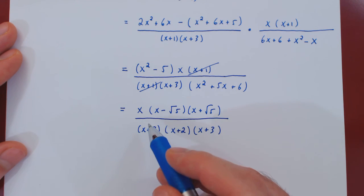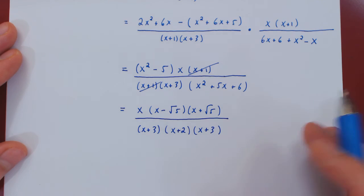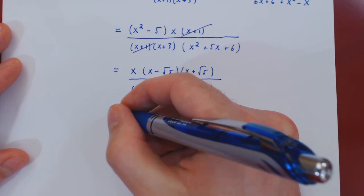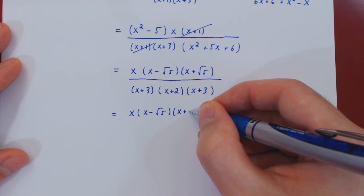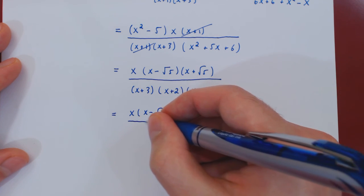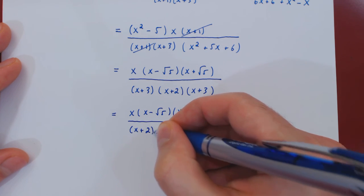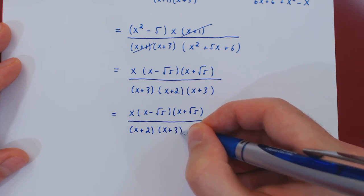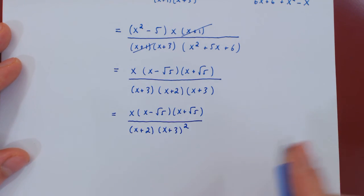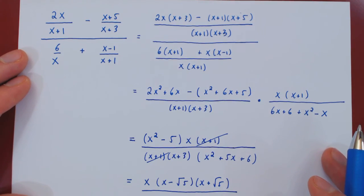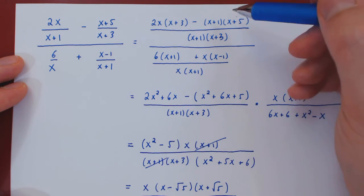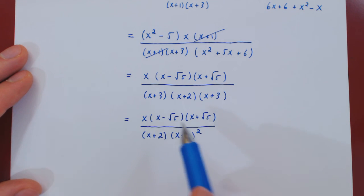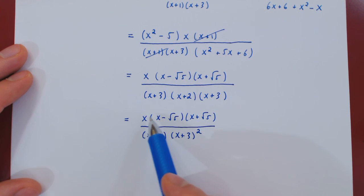And one last step. We have a redundancy on the denominator. (x + 3) shows up twice. So, we can and should regroup. This is an (x + 3)². So, on top we're left with x(x - √5)(x + √5). And on the bottom we have an (x + 2). Times an (x + 3). And again we have two of those. So, (x + 3) times itself. (x + 3)². And now we have. If we go back to the original fraction. We have this stacked fraction. A difference of two fractions. Over a sum of two fractions. And finally. As a single fraction. This is our final answer. Where both the top and the bottom of our fraction are fully simplified and factored.